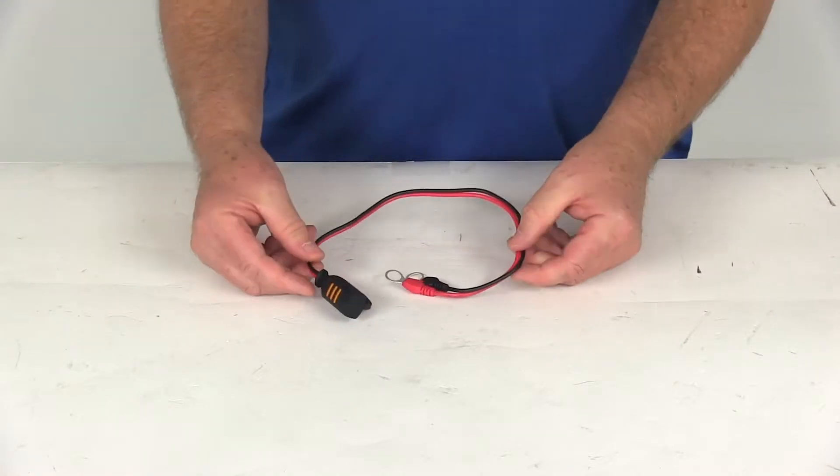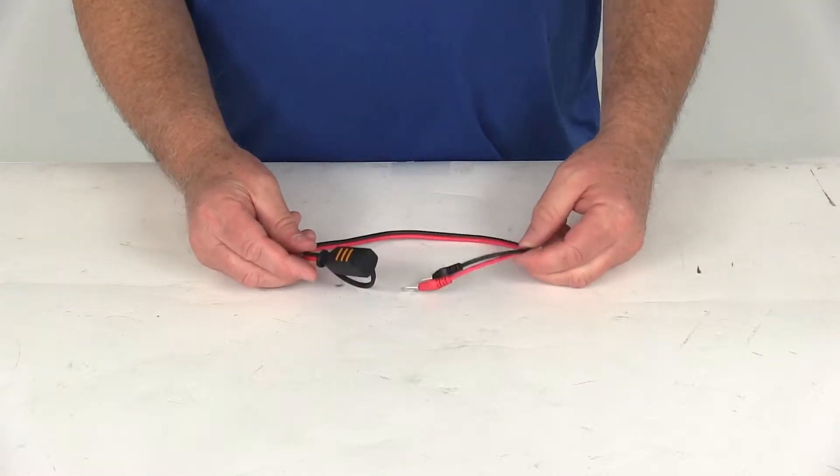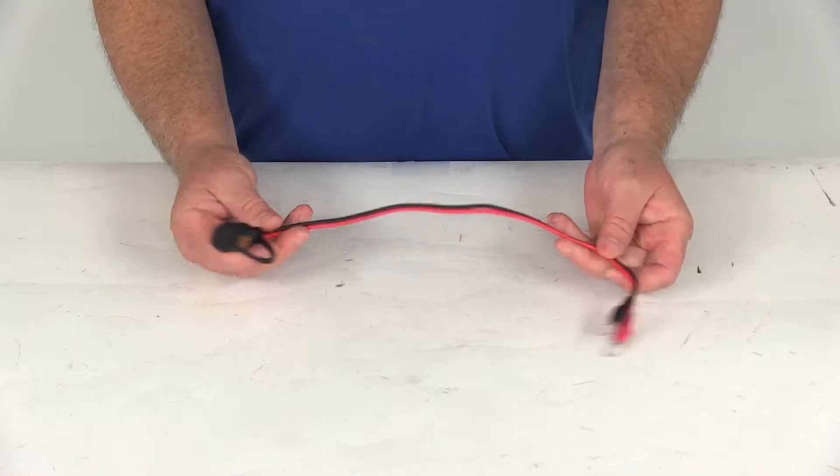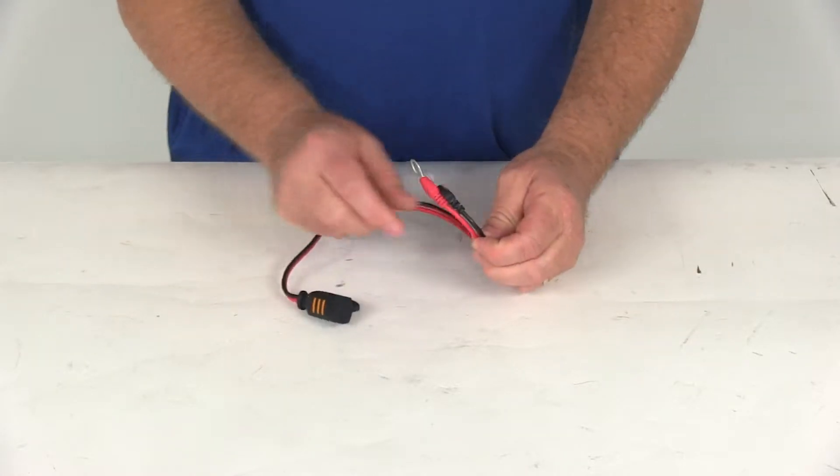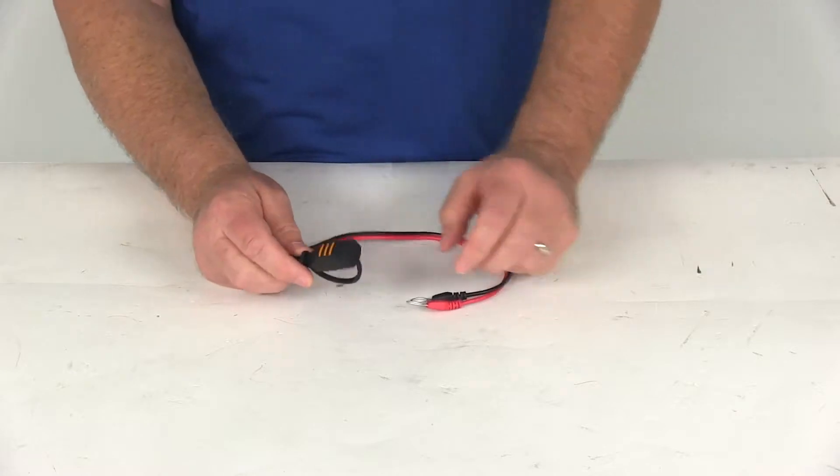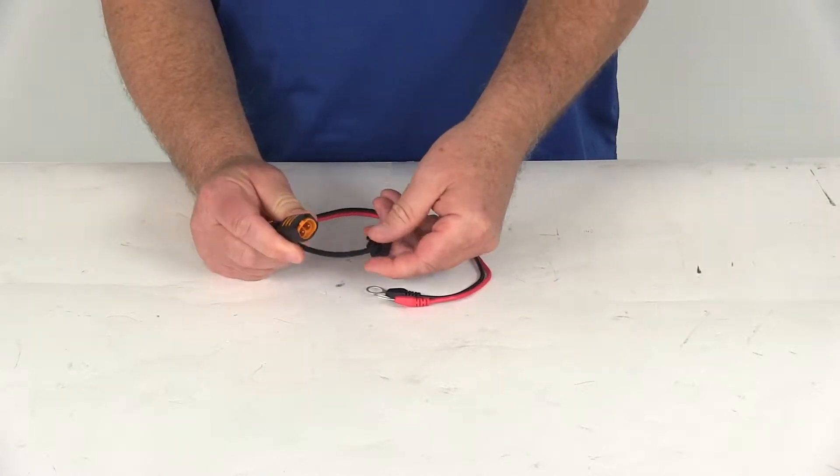Today we're going to take a look at the CTEK Comfort Connect M10 spare battery cable. This cable can be permanently attached to the battery using the 10.5mm eyelet terminals. It provides an easy plug-in charging access right here.